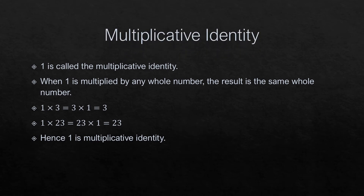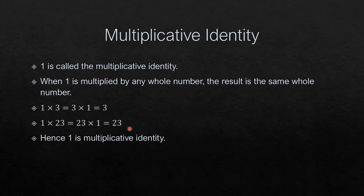What is multiplicative identity? 1 is called the multiplicative identity. When 1 is multiplied by any whole number, the result is the same whole number. For example, 1 into 3 is 3 and 3 into 1 is also 3. 1 into 23 equals 23 into 1 equals 23. Hence, 1 is the multiplicative identity.